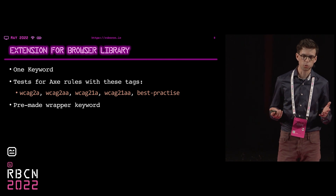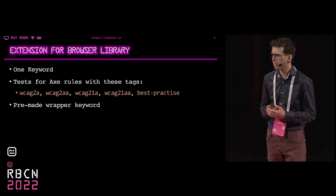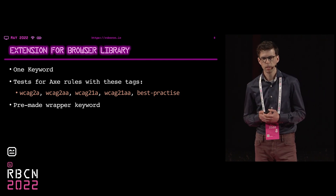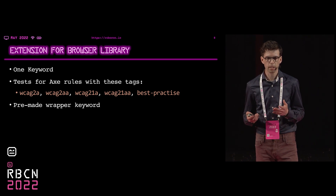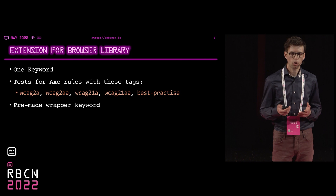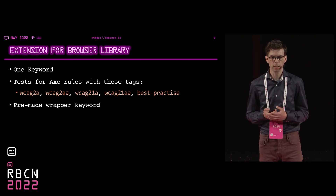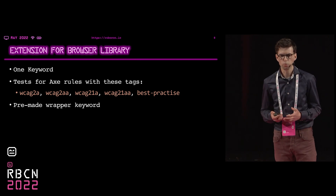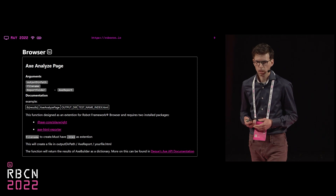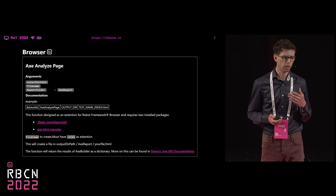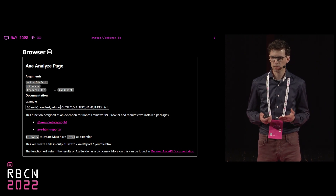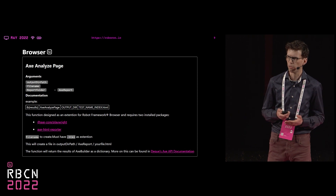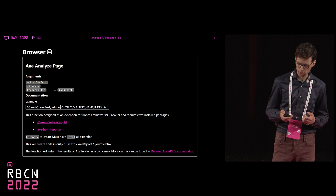That brings us to the Browser Library. Because with Browser Library, you can extend it with Node.js and JavaScript. I've made one keyword that tests all the Axe rules on Web Content Accessibility Guidelines 2A, AA and the best practice rules. I also provided a pre-made wrapper keyword that gives you a report and logging with all the information you need to know what violations you have, and guidelines for your developers on how to solve these issues.